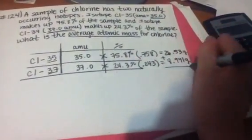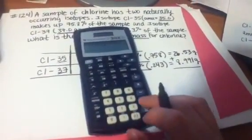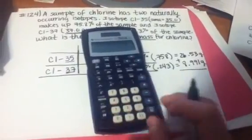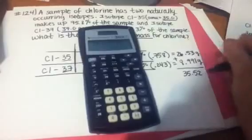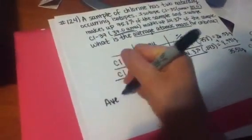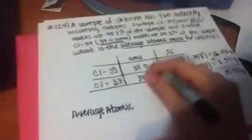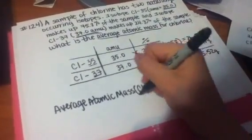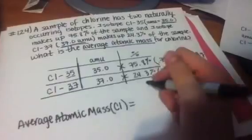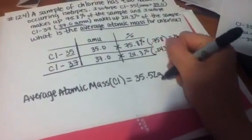So we're going to add these two up. Once again, I'm going to use my calculator. 26.53 plus 8.991 equals 35.52 grams. And so my average atomic mass for chlorine is 35.52 grams.